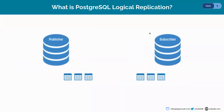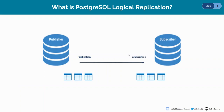In simple words, in logical replication there's a publisher database which will create a publication for a set of tables. And there's a subscriber database which will create a subscription to subscribe to that publication to replicate the set of tables.